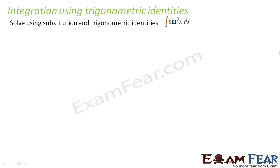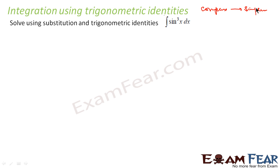Lot of places we will see that substitution is not sufficient to convert a complex integral to a simpler integral. Our approach is pretty clear — we have to convert the complex integral to a simpler one and solve it. Lot of places it is not possible or difficult to use substitution, so there we use trigonometric identities.